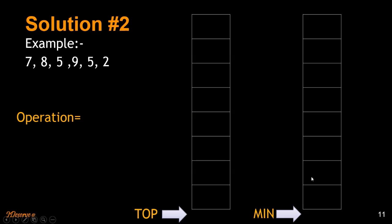The correct approach is to maintain another stack where you keep track of minimums at each level of the main stack. Whenever an item is pushed onto the main stack, we compare it with the top of the minimum stack. If the item being pushed is greater than the top of the minimum stack, we don't do anything. If it is less, we push it onto the minimum stack as well.